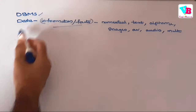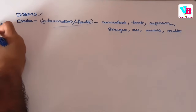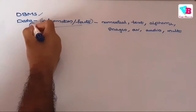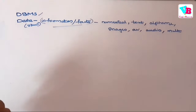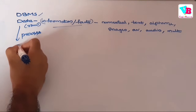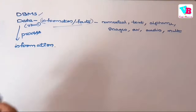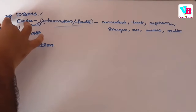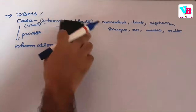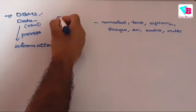That is the general definition. But according to DBMS, data is raw and unprocessed format — raw format, unprocessed format data. In general, we call data 'information or facts,' but according to DBMS, it is just raw facts — not processed information. When we process this data, we get what is called information in DBMS terminology.